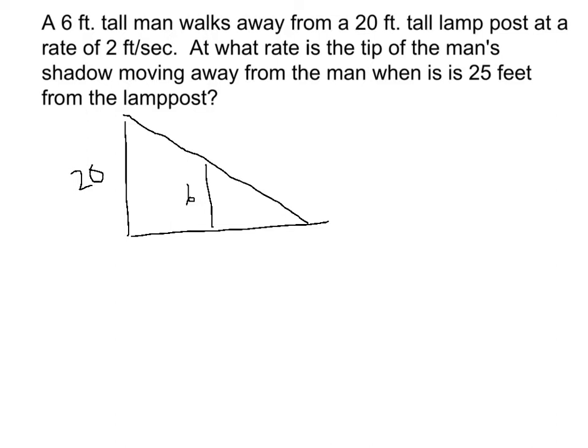Now I should add some more labels here. I'm going to call this x, I'm going to call this y. So that's our D step. Now the rates, well I know dx/dt is 2 and I need to know dy/dt. I need to know how fast the shadow is moving away.